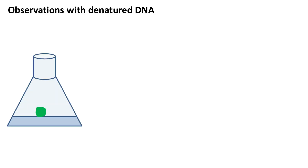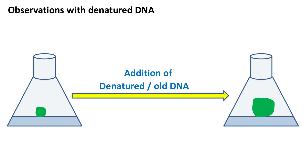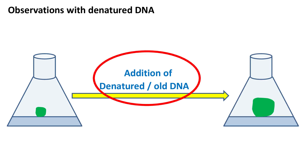A different group of scientists made a similar observation with denatured DNA. An old and denatured sample of DNA stimulates cell division in tissue culture. This means the denatured sample of DNA had something that induces plant cell division.